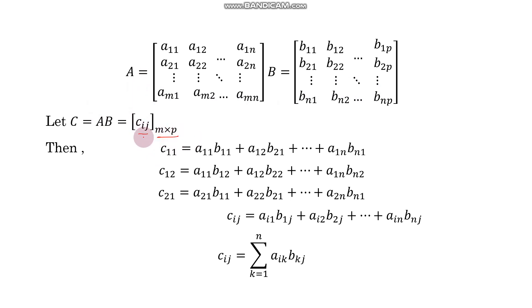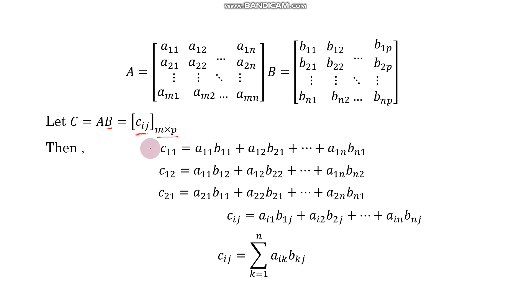Now let us understand the product of two matrices in a generalized way. A is the matrix of order M by N and B is the matrix of order N by P, giving C of order M by P. To find the expression for Cij, we multiply the i-th row of matrix A by the j-th column of matrix B as a dot product. Let's look at some examples before writing the general expression.